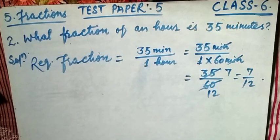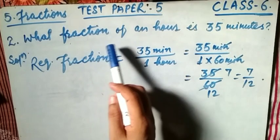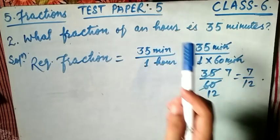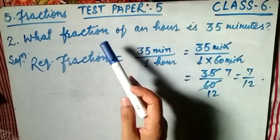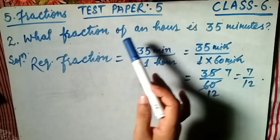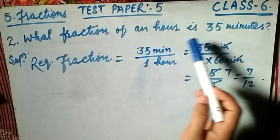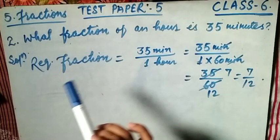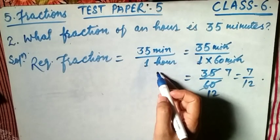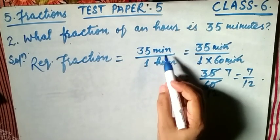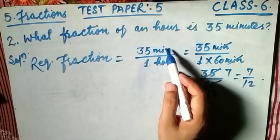Let's get started. Question number 2 says: what fraction of an hour is 35 minutes? We have to find the fraction. The required fraction is 35 minutes divided by 1 hour. We have to divide 35 minutes by 1 hour, but these are different units — minutes and hours.